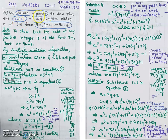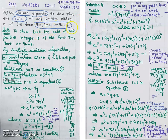In this type of question, underline the keywords: division algorithm, cube, 9m, 9m plus 1, 9m plus 8. Now you have to write a statement — it is asked to show that the cube of any positive integer is of the form 9m, 9m plus 1, or 9m plus 8. Observe that 9 is common in all three forms.